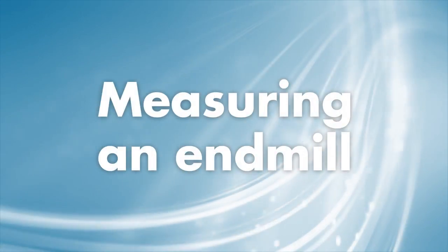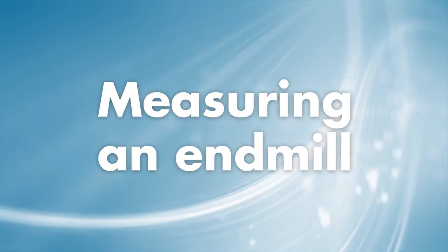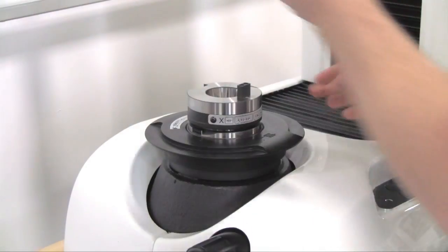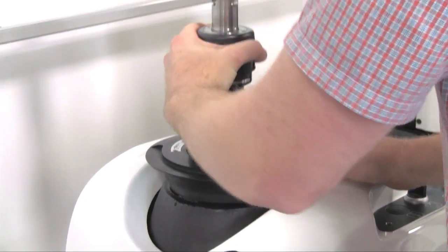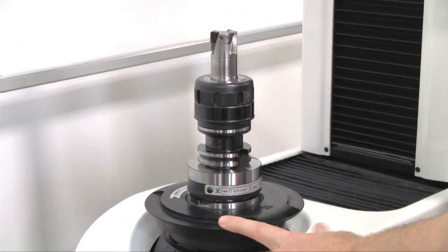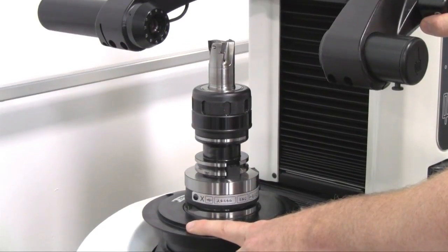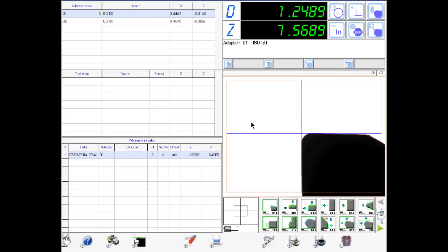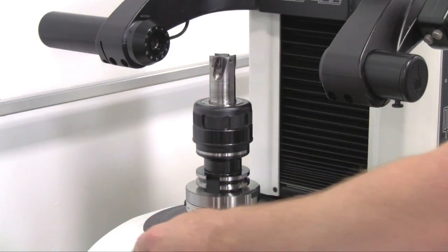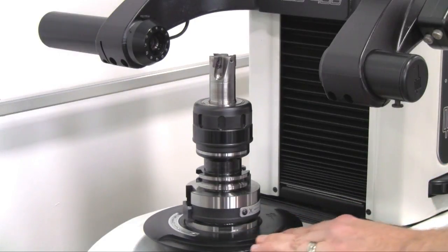The next common tool used in any shop is an end mill, such as Big Kaiser's full cut rough milling cutter. Start by inserting the tool into the spindle. Move the vision arm by depressing the rapid X and Z buttons so that the tool tip is in view of the measuring window. Manually rotate the tool in the spindle to focus on the single cutting edge.